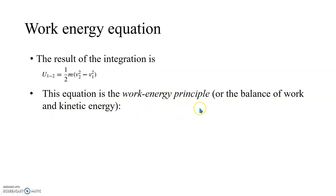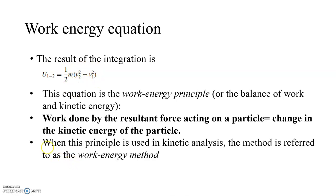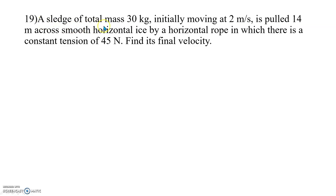This equation is known as the work-energy principle, otherwise known as the work-energy method or balance of work-energy method. The work done by the resultant force acting on a particle, U₁₂, equals the change in kinetic energy: ½m·v₂² − ½m·v₁². Now let us do a problem to illustrate this. A sledge of total mass 30 kg initially moving at 2 m/s is pulled 40 meters across smooth horizontal ice by a horizontal rope with a constant tension of 45 Newton. Find its final velocity.